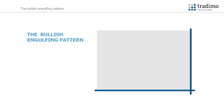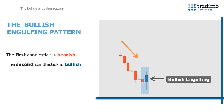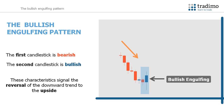Let's have a closer look at the characteristics of a bullish engulfing pattern. You can see in this example the market is in a downtrend. Notice the highlighted area where the first candlestick of the pattern is bearish, shown by its orange colour. The second candlestick in the pattern is bullish, indicated by its blue colour, and engulfs the body of the preceding bearish candlestick. These characteristics signal the reversal of the downward trend to the upside and demonstrate how the bears were overpowered by the bulls.